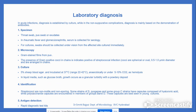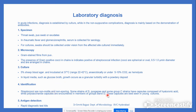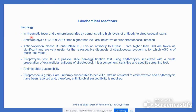Lab diagnosis: specimens include throat swabs, pus, exudates, and serum (for rheumatic fever). Cultures are performed on blood agar, liquid media, and nutrient agar. Identification is based on biochemical tests and rapid antigen detection kits. Serologically, a high level of antibody to streptococcal toxins is demonstrated — the anti-streptolysin O (ASO) titer above 200 is indicative of prior streptococcal infection.